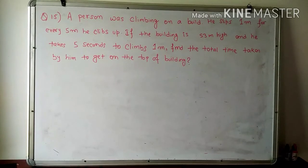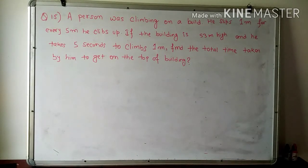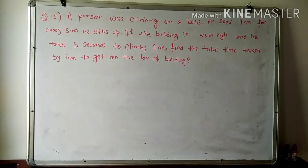The last and final question: a person was climbing a building. He slips 1 meter for every 5 meters he climbs up. If the building is 53 meters high and he takes 5 seconds to climb 1 meter, find the total time taken by him to reach the top of the building. This is a very interesting question because it has three different answers. I am going to explain this question so everyone gets a clear picture.